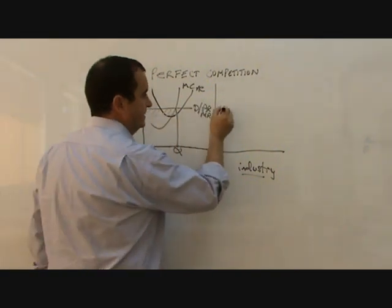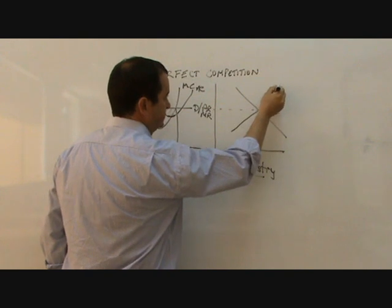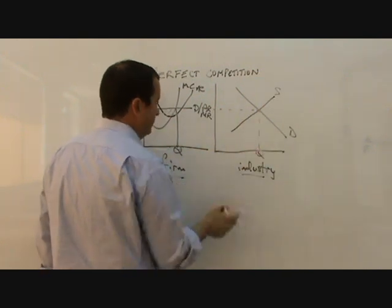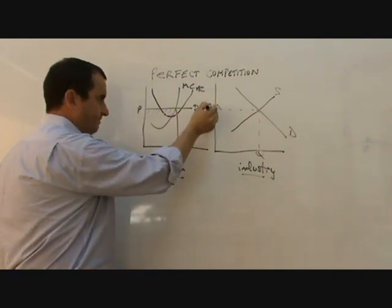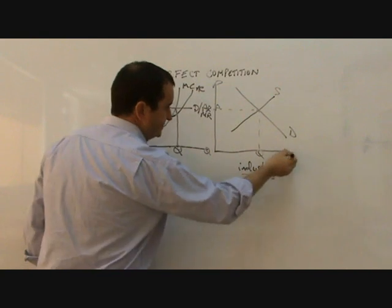And if the price is here, then in the industry as a whole, perhaps the supply and demand is something like this. And this is the industry total of price P. The price on the vertical axis, of course, quantity on the horizontal axis.